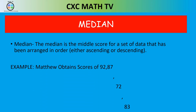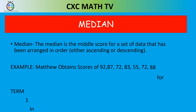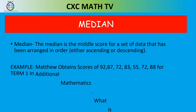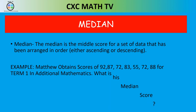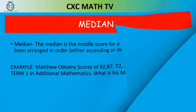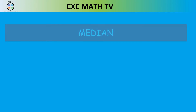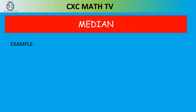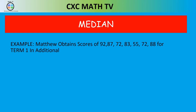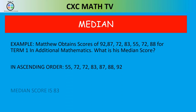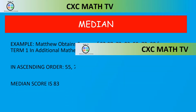Matthew's scores are 92, 87, 72, 83, 55, 72, and 88. To find the median, we arrange them in ascending order. With three terms to the left and three terms to the right, the middle value is 83 — so Matthew's median score is 83.